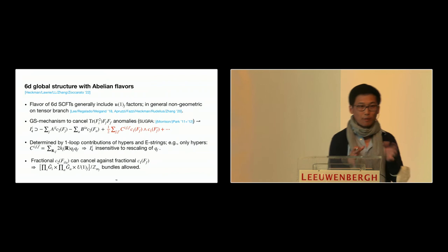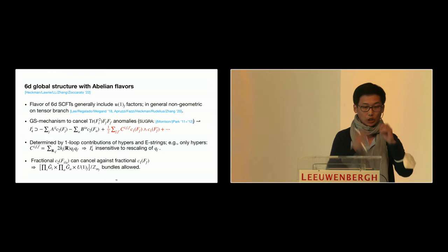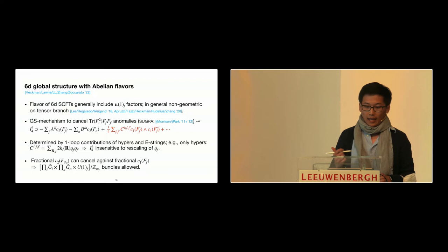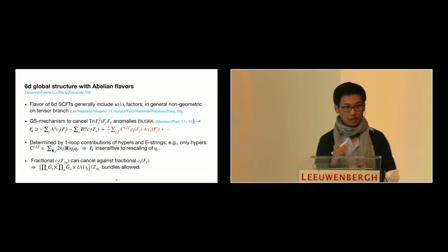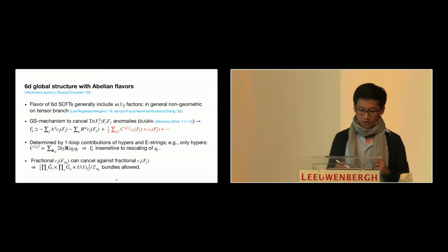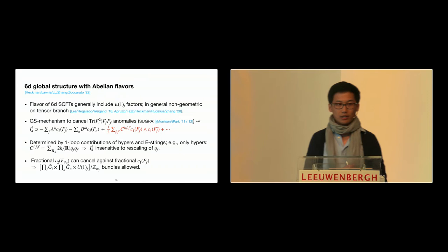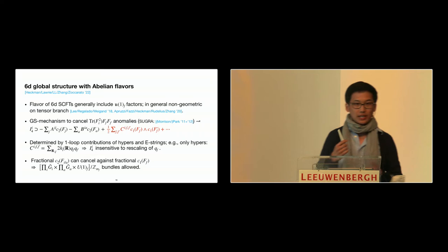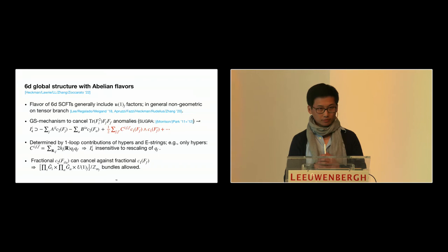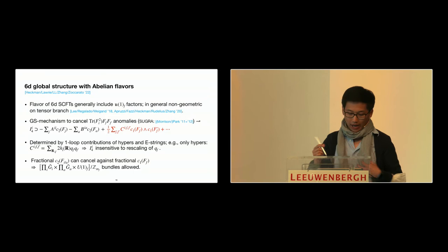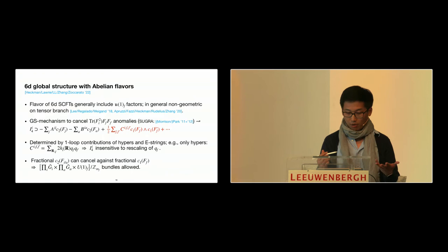Let me go back to 6D and complete the characterization of the global group structure of the symmetries, including the remaining factors. One part is the abelian — or really U(1) — continuous abelian factors. On the tensor branch, these abelian factors are in general not geometric, so you cannot generally make the U(1) factor of the SCFT manifest in geometry. There are some ABJ anomalies that you have to carefully check to make sure they are unbroken at the quantum level. Just like the non-abelian flavor symmetries, there's also a Green-Schwarz mechanism that you can introduce for the abelian part that cancels this type of anomaly, formally introducing this type of term inside your Green-Schwarz four-form.